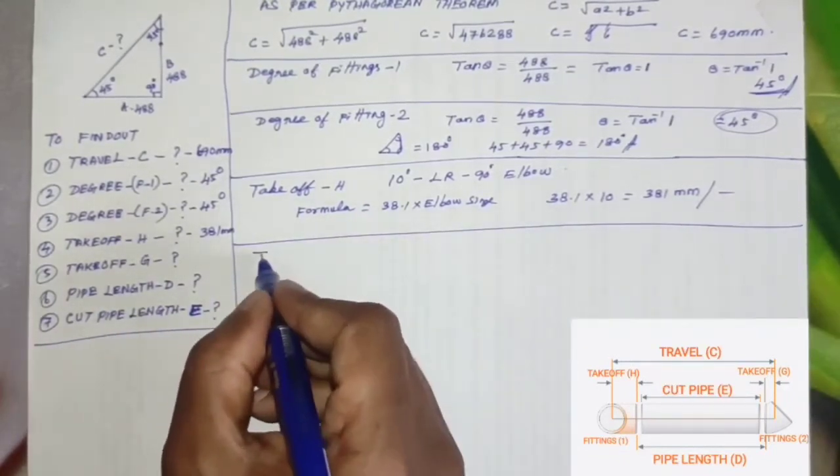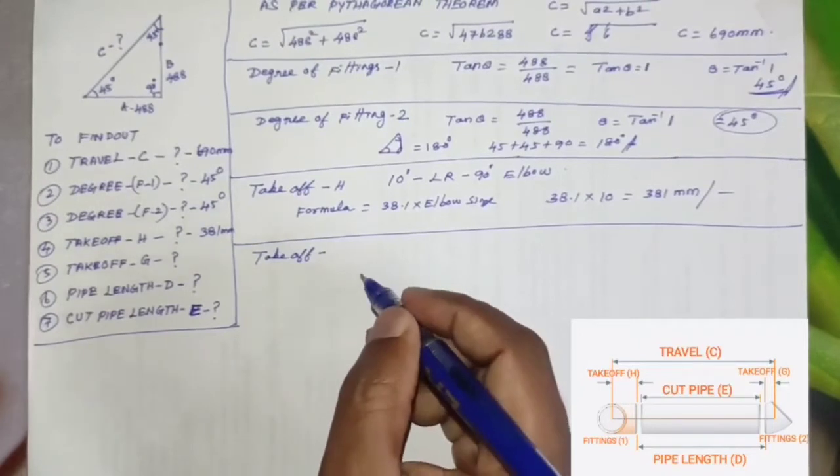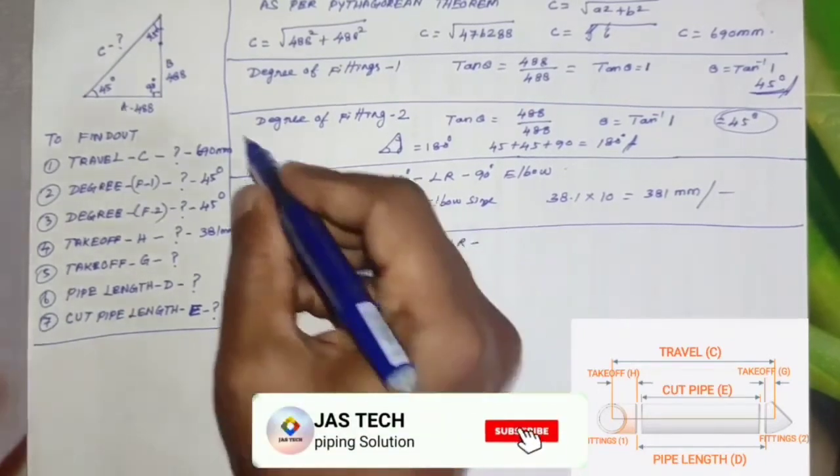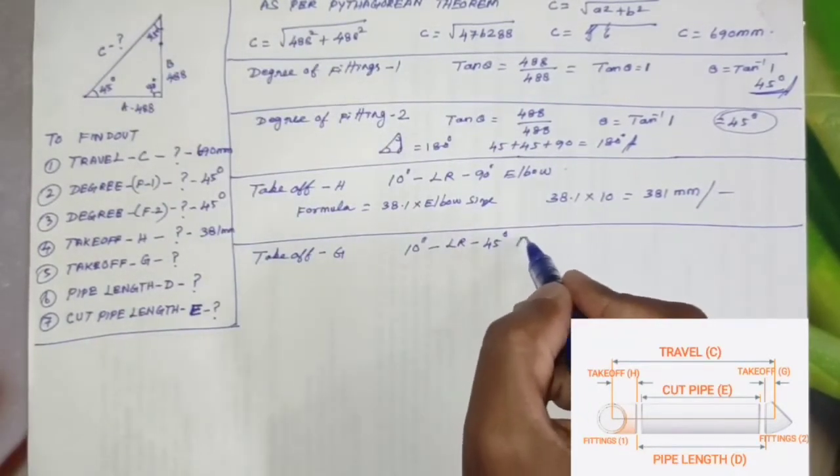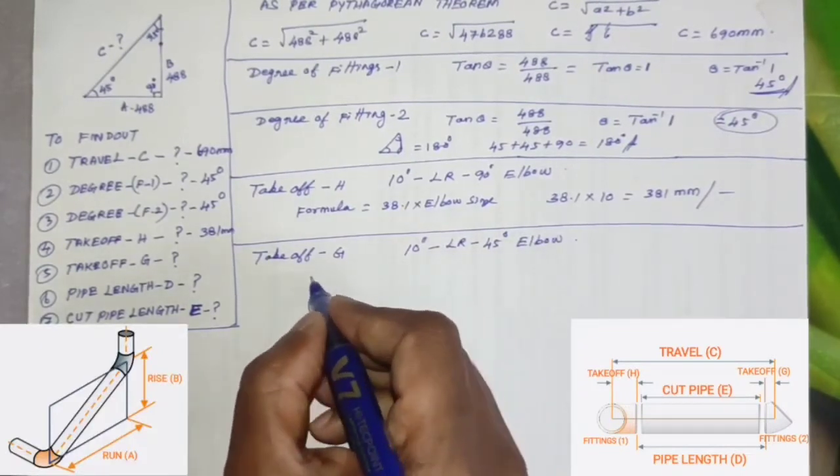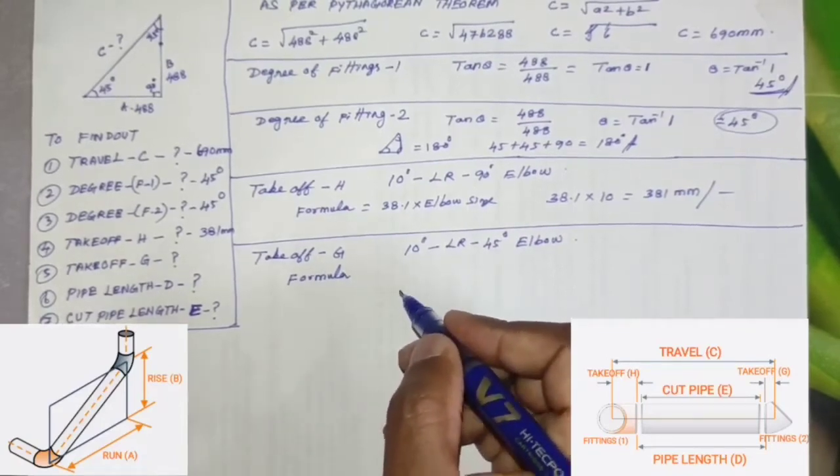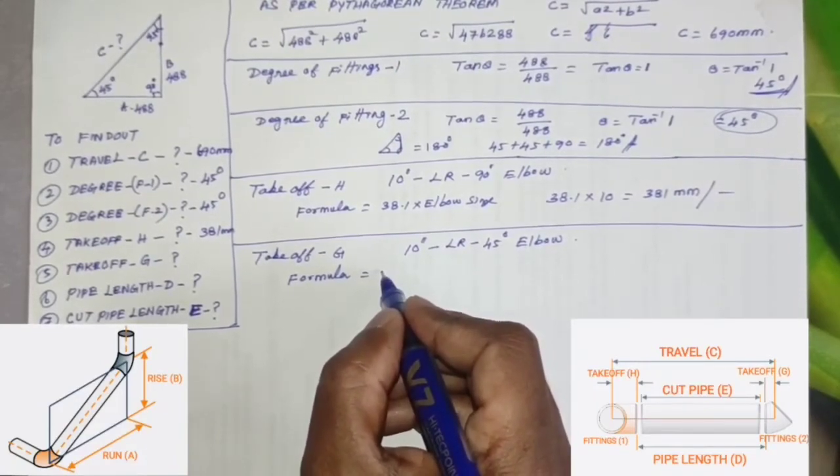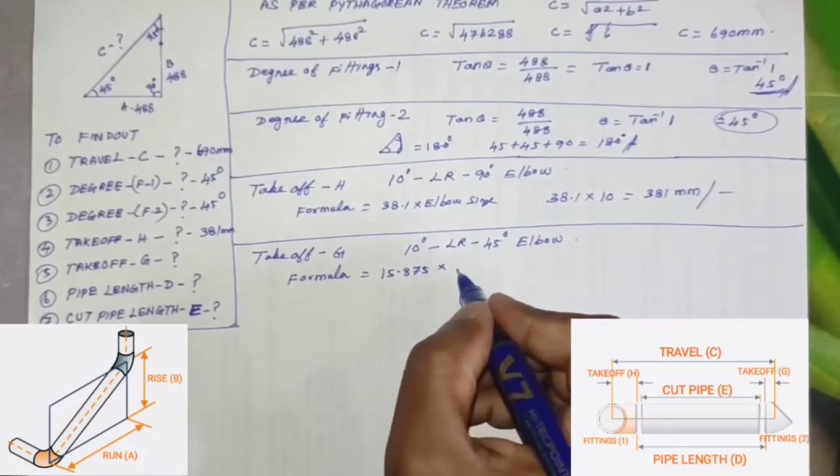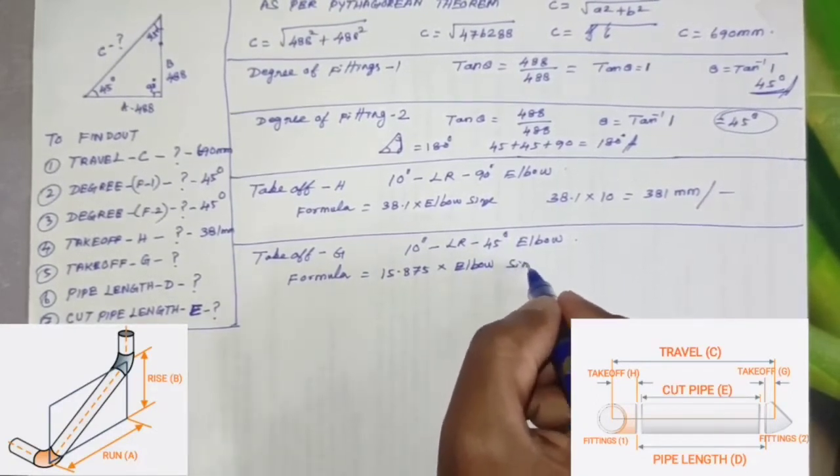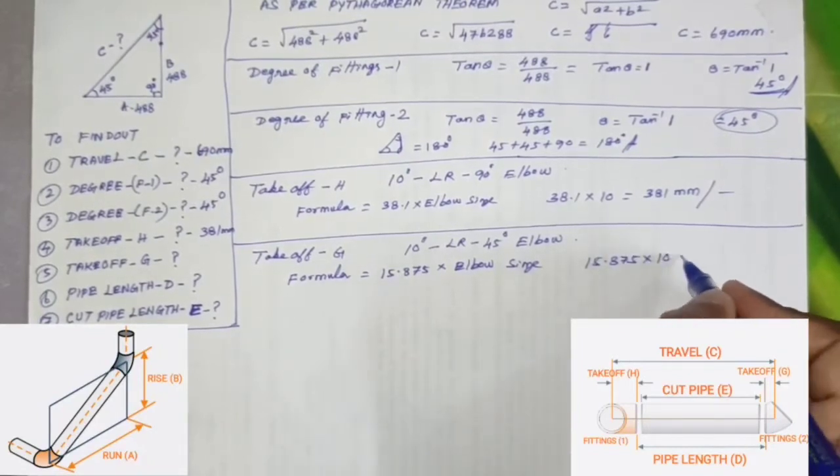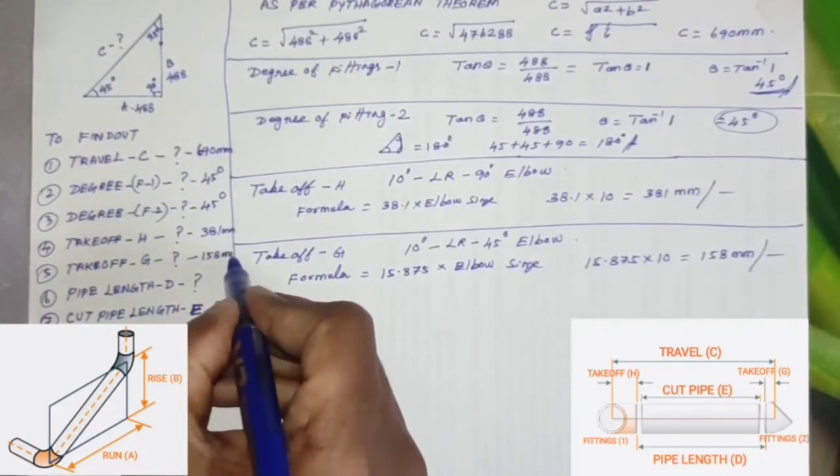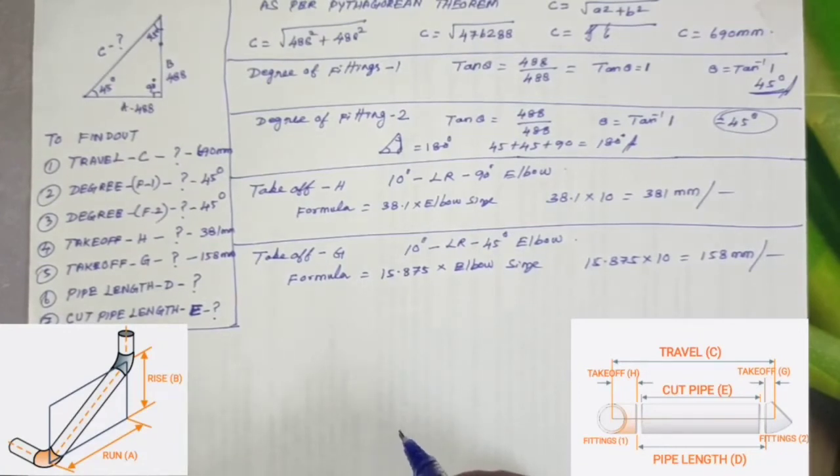Takeoff H equals 381 mm. Another takeoff, takeoff G: this is also 10 inch long radius but 45-degree elbow. Formula for takeoff 45-degree long radius elbow equals 15.875 times elbow size or pipe size. So 15.875 times 10 equals 158 mm.